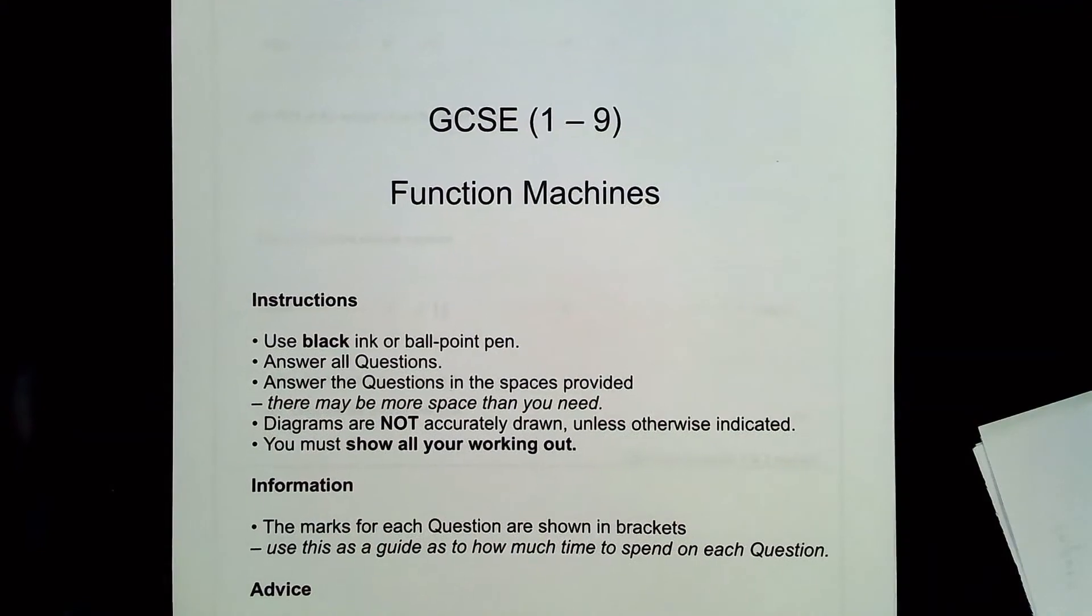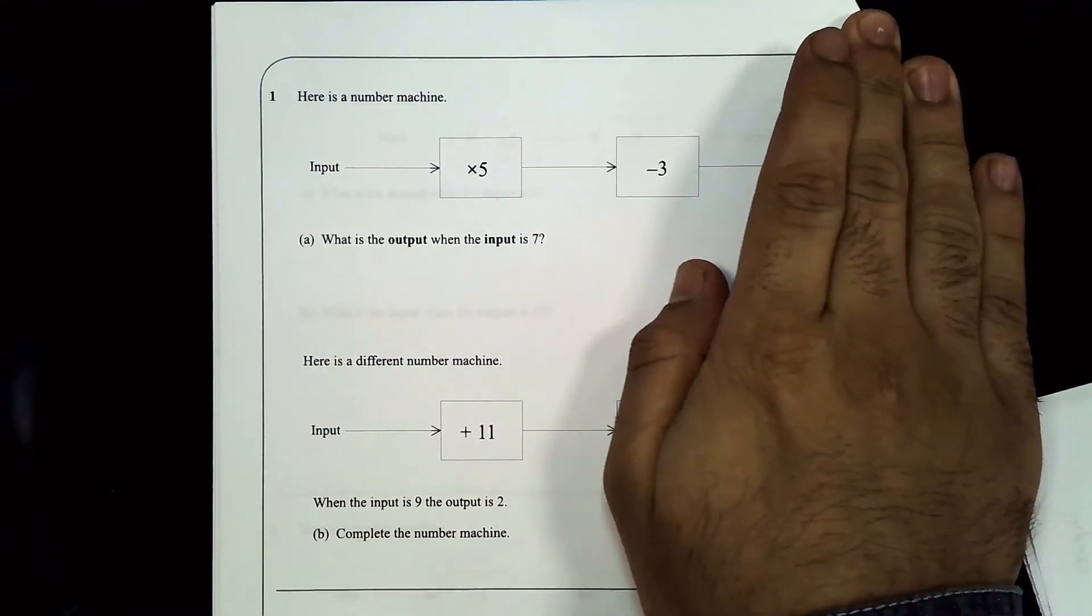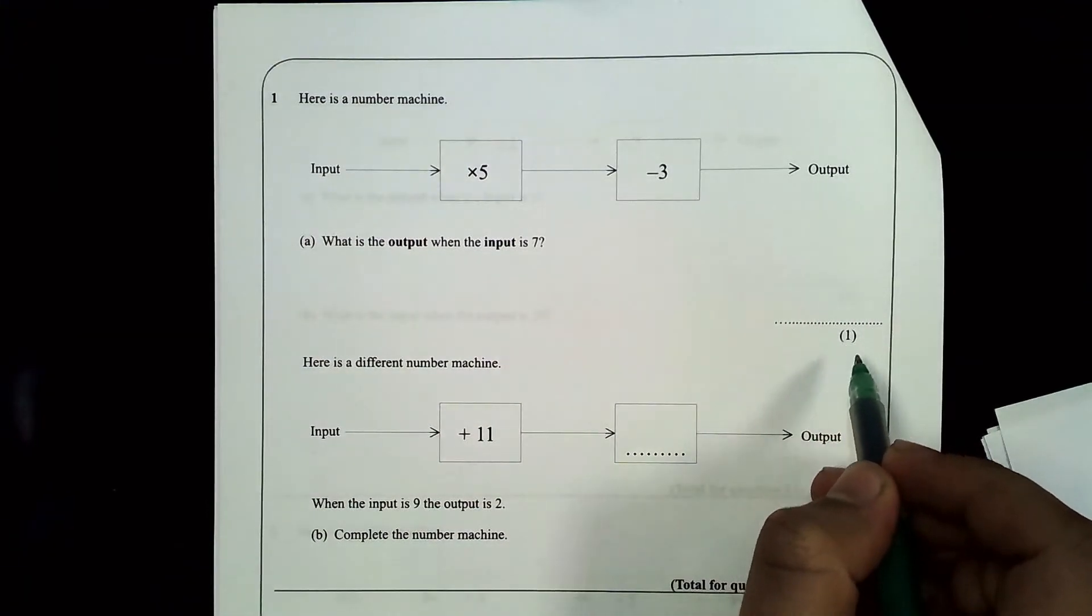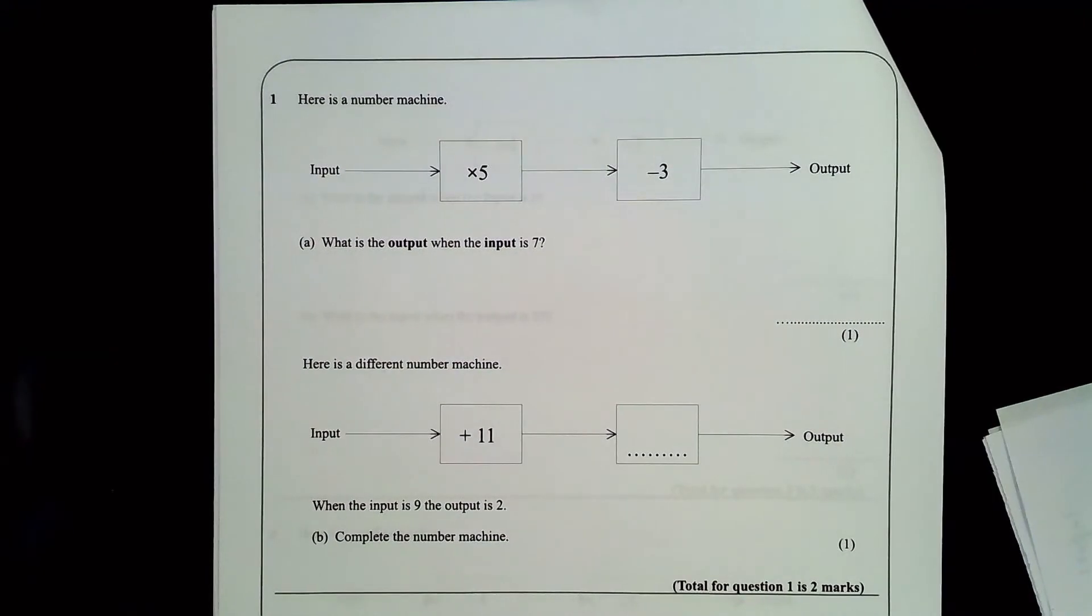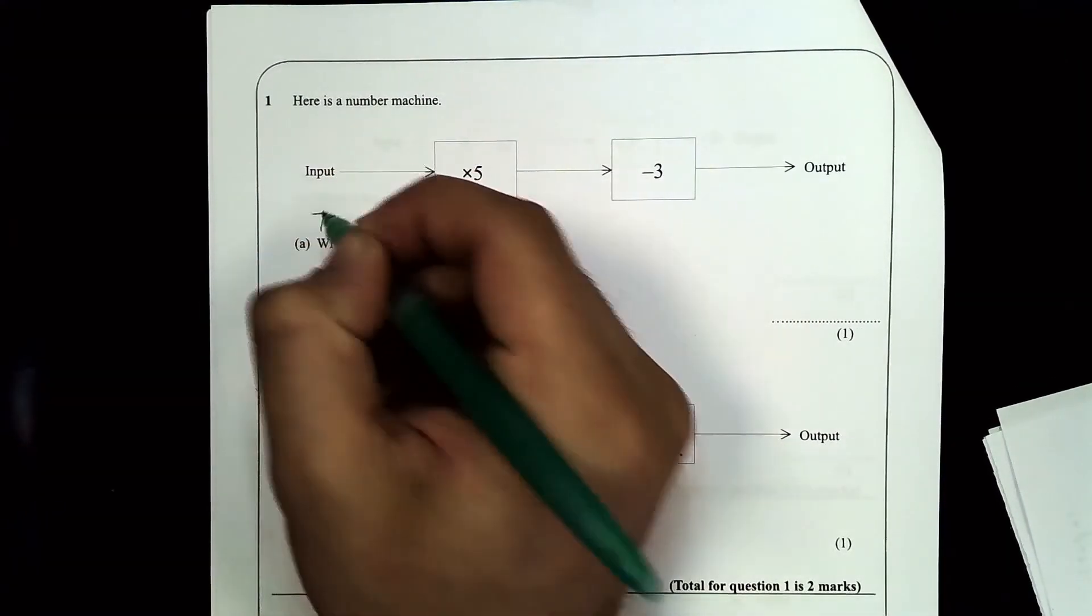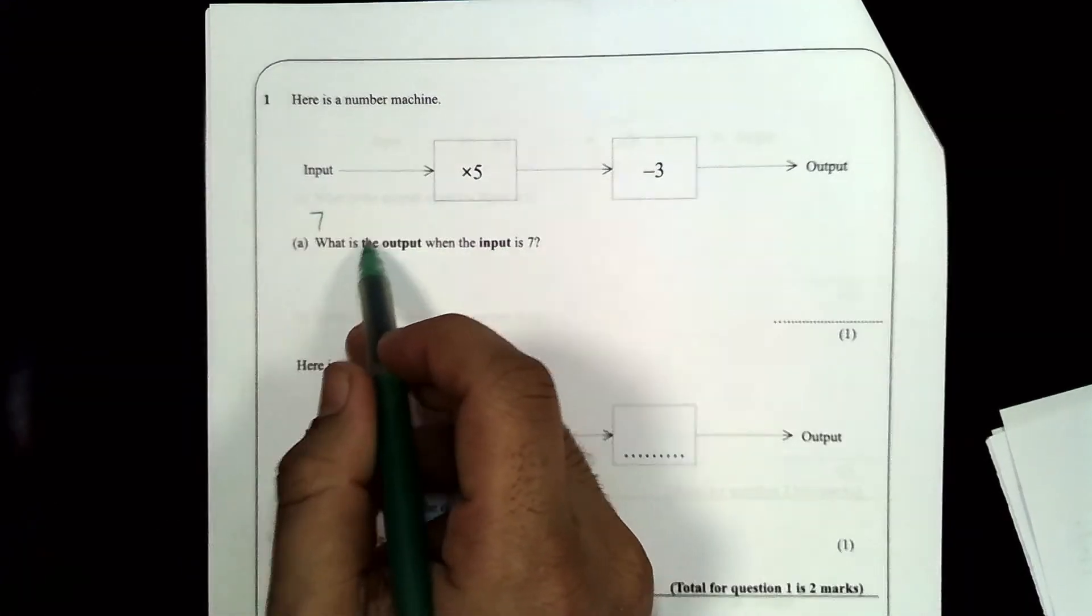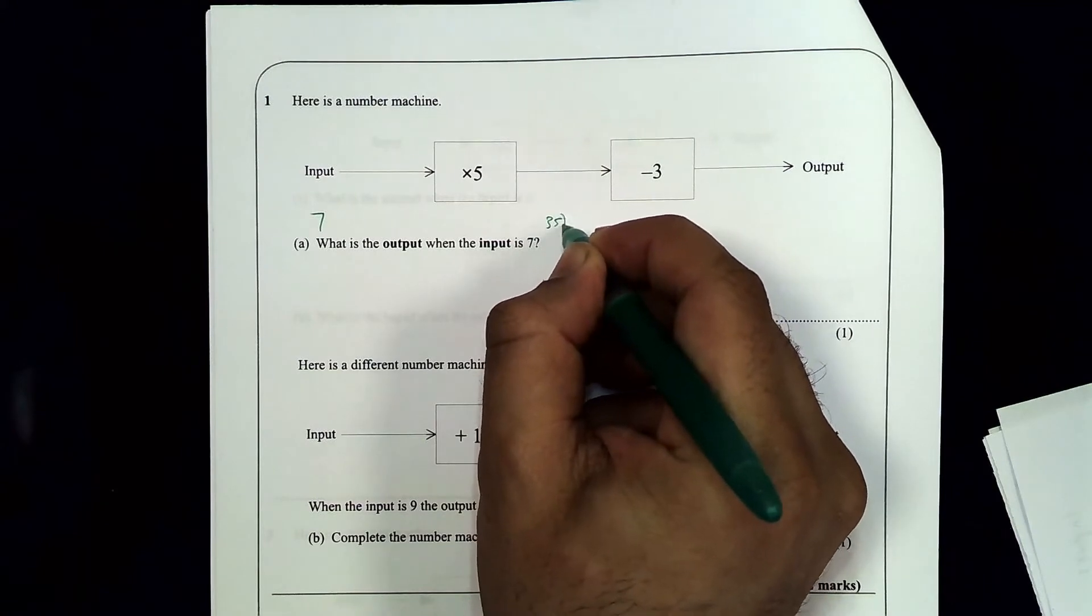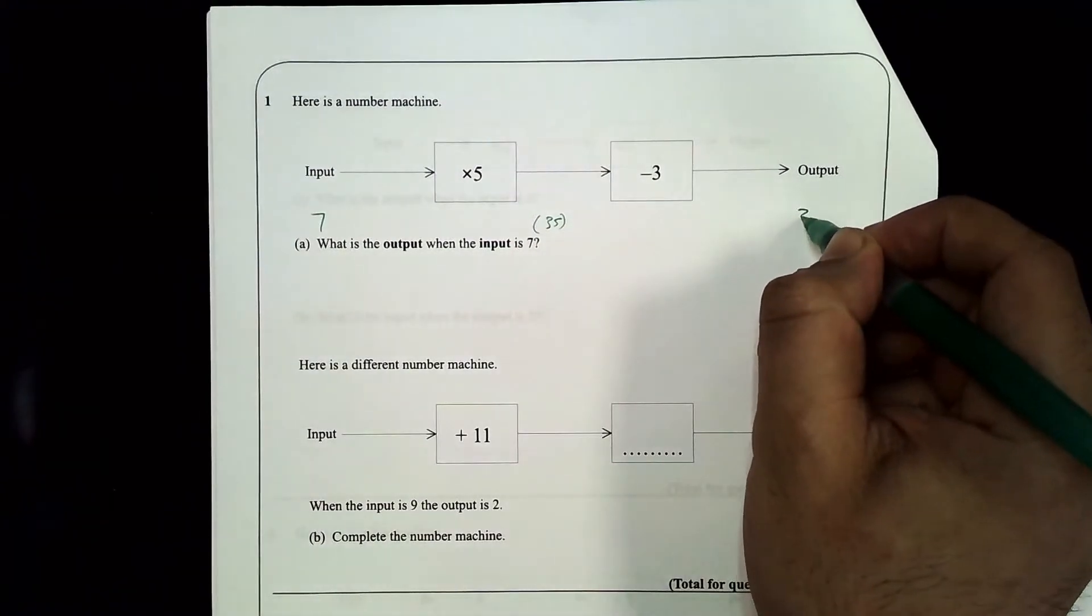So we're now going to look at a few exam questions on function machines. Here is our first exam question. Here is a number machine: input multiplied by 5, take away 3, output. What is the output when the input is 7? So a very simple question. You'll notice only one mark. You're being asked to put 7 into this machine. If I put 7 in the machine, 7 times 5, that's 35. 35 take away 3, that's 32.